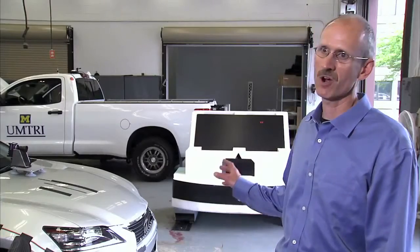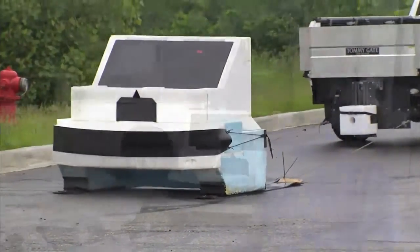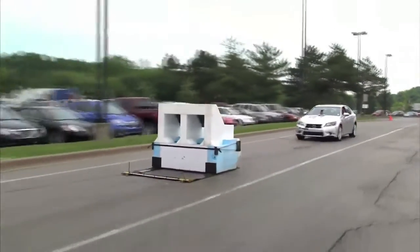So this is our surrogate target, which is a fake car that can be hit at speeds up to 30 or 35 miles an hour. It looks like a real car to a radar. We've done hundreds of tests out at the track with that system and collected all that data.